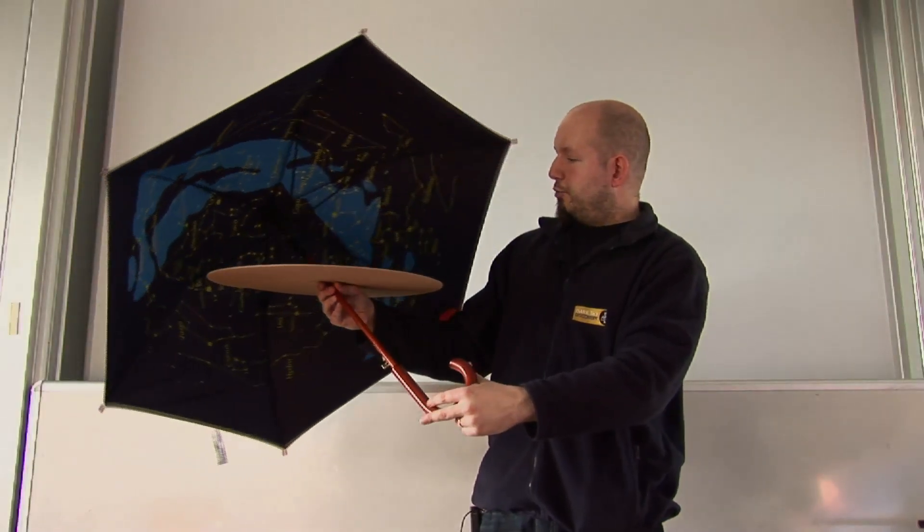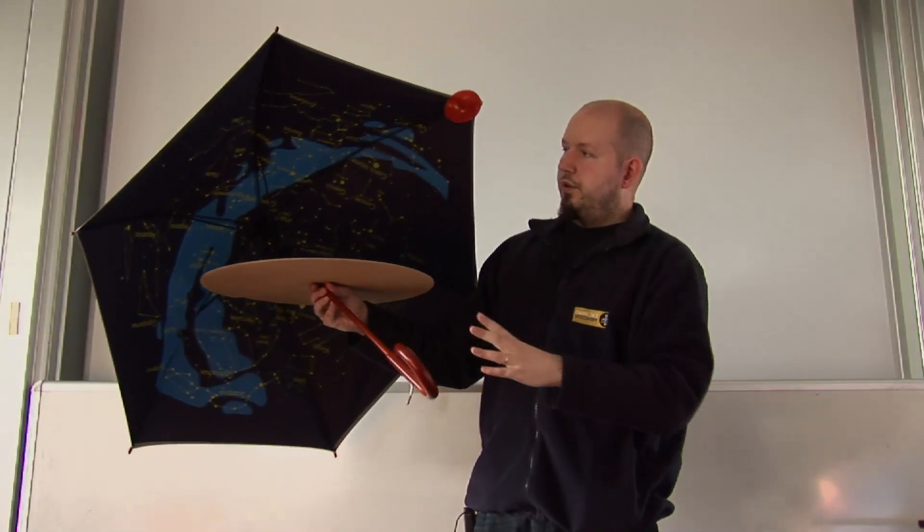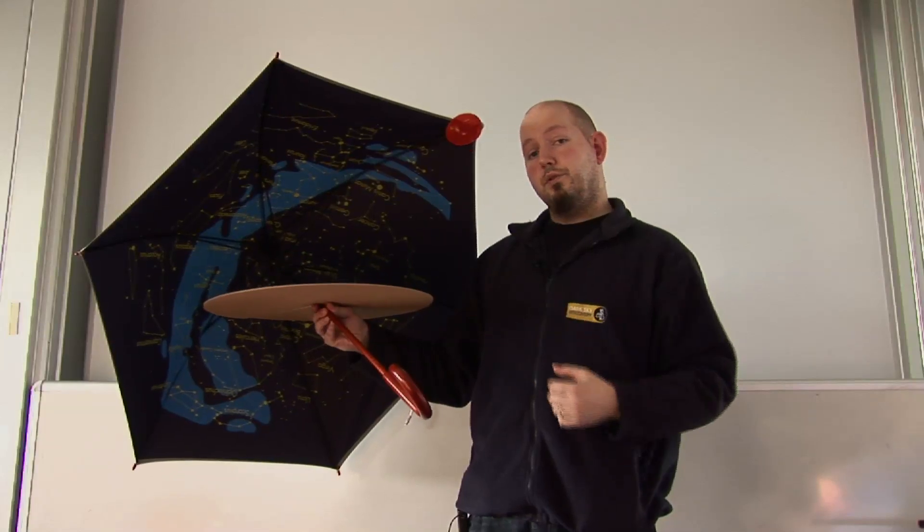As the Earth keeps on spinning, the sun pops up again. Sky goes bright. All the stars disappear and we've come through 24 hours and also all the way through six months.